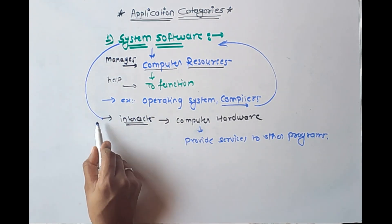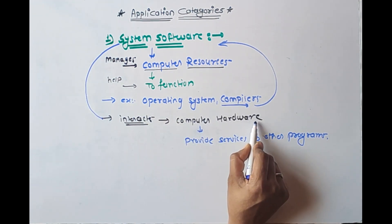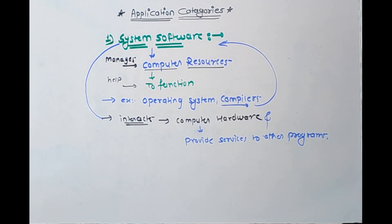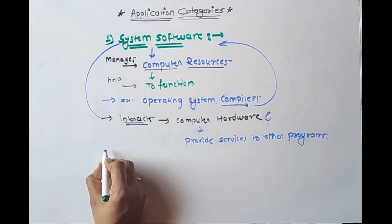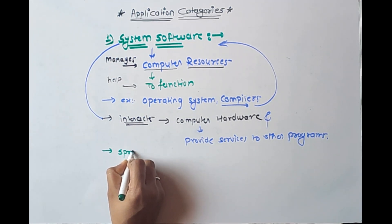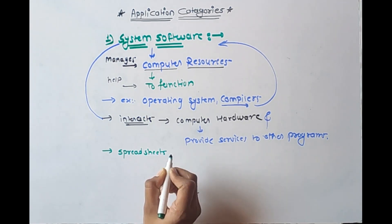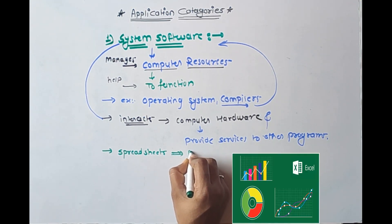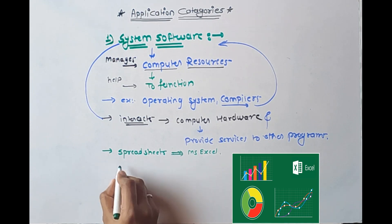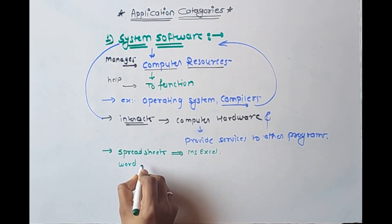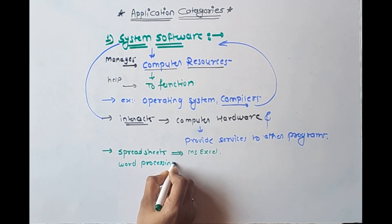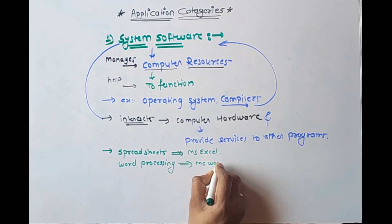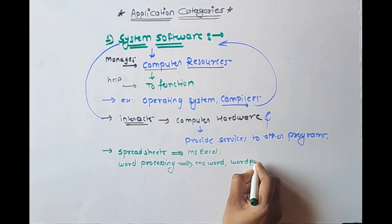System software interacts with the computer hardware and provides services to other programs. Some examples include spreadsheet software — for instance, MS Excel — and word processing software such as MS Word and WordPad.